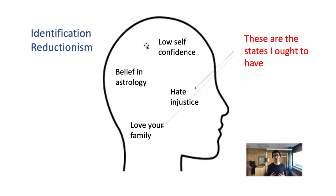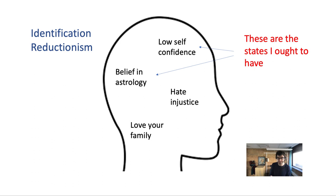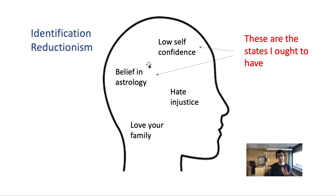Even though you're not identical to those mental states, you can still self-determine your decision in virtue of them — if you stand in a close enough relation to them. But if you make a decision based on beliefs you don't identify with, it's not self-determination. One problem with this proposal, however, is that you could be brainwashed by a sect into identifying with your low self-confidence and belief in astrology. Then even acting on states you now identify with still wouldn't be genuine self-determination, since you were brainwashed into those beliefs.